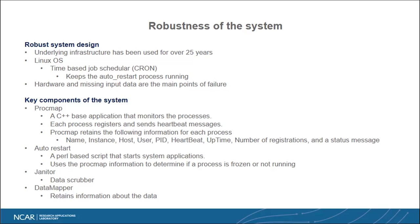The auto-restart uses information from proc map to know whether all processes are up. If a process has a process ID but no recent heartbeat, it's considered frozen and we restart it. If there's no heartbeat and no process ID, the application has crashed and needs to be restarted. This is how we keep things running even through data glitches that might crash a piece of software. We also have a janitor that handles data scrubbing to keep the disk from filling up — it's configurable for how many days to retain data and how full the disk is allowed to get.